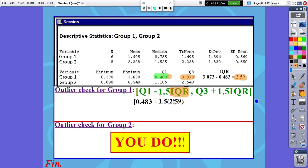So I'm going to take 1.5 times 2.59 and subtract that number from Q1, 0.483. But I'm also going to take Q3, which was 3.073, and I want to add the 1.5 IQR number. Again, whatever that 1.5 times 2.59 value is.